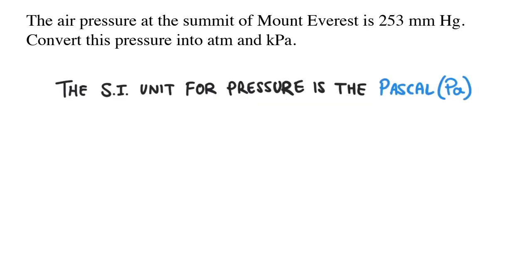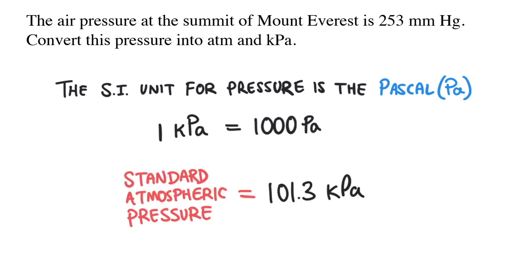The SI unit for air pressure is the Pascal. However, this is such a small unit of measure that we often use kilopascals, which is a thousand pascals. Standard atmospheric pressure, the pressure at sea level, is about 101.3 kilopascals.